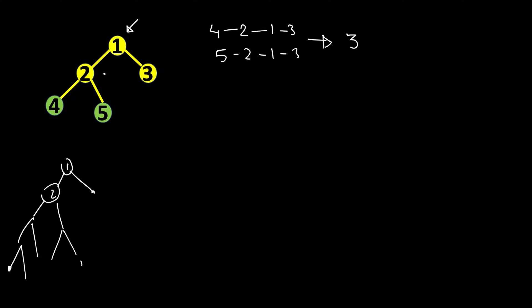So it may be possible that the diameter, the longest path, lies in the left subtree itself and nothing from the right subtree. Or the diameter may lie completely in the right subtree and nothing from left subtree. And the third possibility is that one component of the path lies in left subtree and the other in right subtree. So in order to find the diameter of root, you have to find the max of these three things: diameter of left, diameter of the right subtree, and third is that the path goes through root.